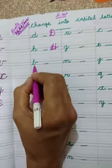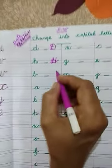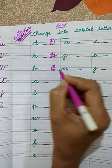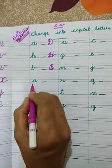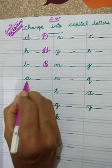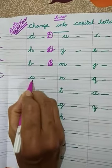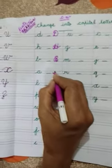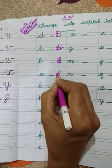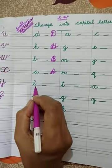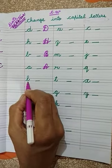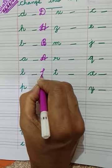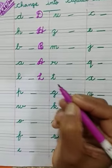Next letter B. We have to write here Cursive Capitalities. Tell me children, which letter is this? Very good — Cursive Small letter A. Then we have to write here Cursive Capitalities, Capital letter A. Next letter L. We have to write here Cursive Capitalities, Capital letter L.